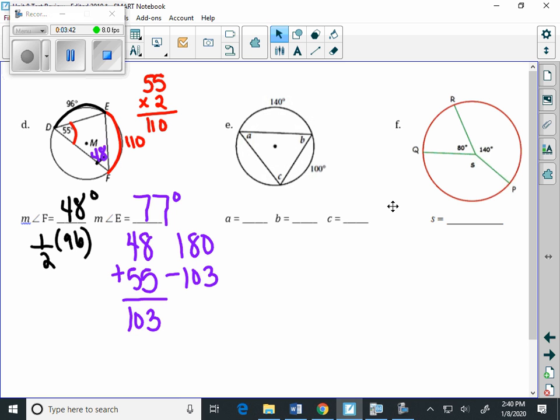Letter E. Again, remember that there are 360 degrees in a circle, and in this particular case we know 140 plus 100. So 140 plus 100 is 240.